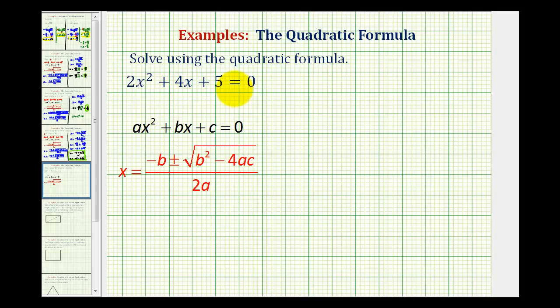We want to solve the given quadratic equation using the quadratic formula provided here in red, where a is the coefficient of the x² term, b is the coefficient of the x term, and c is the constant term.